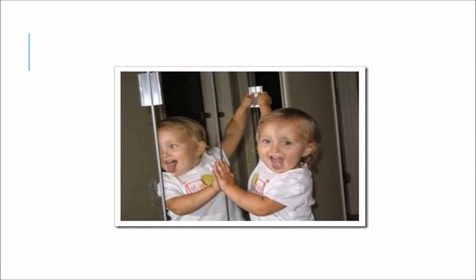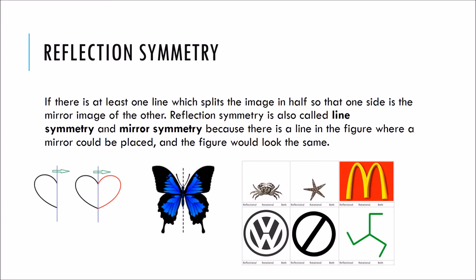When you look in the mirror, you see your reflection. So it is easy to identify that when a shape has a line of symmetry, it has reflection symmetry. We come to understand that if there is at least one line which splits the image in half so that one side is the mirror image of the other. Reflection symmetry is also called line symmetry and mirror symmetry because there is a line in the figure where a mirror could be placed and the figure would look the same.